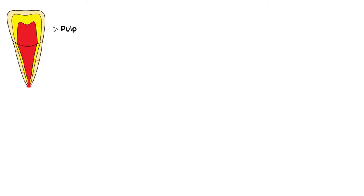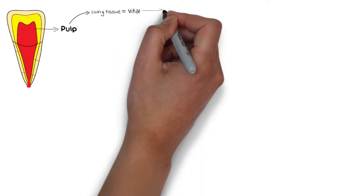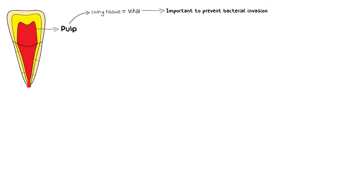Bacteria are constantly present in our oral cavity, but still our teeth and the pulp are very well protected from infection. The pulp is a living tissue inside the tooth — it has blood vessels and nerves through which the tooth gets its nutrients and remains vital. This vitality of the pulp is very important in order to prevent and slow bacterial invasion to the pulp.